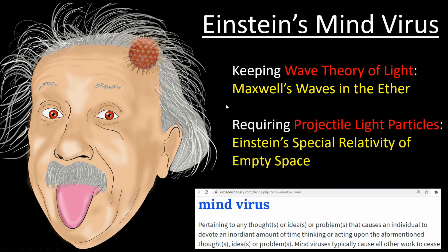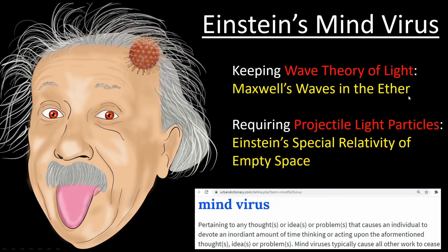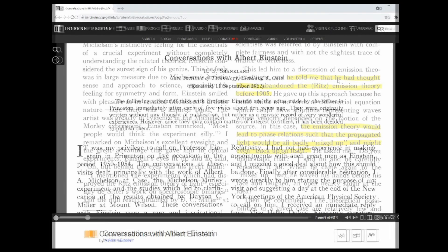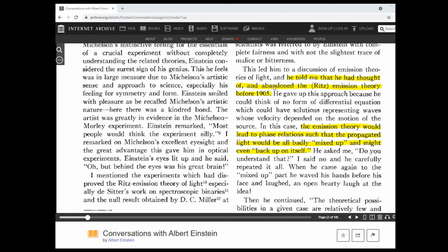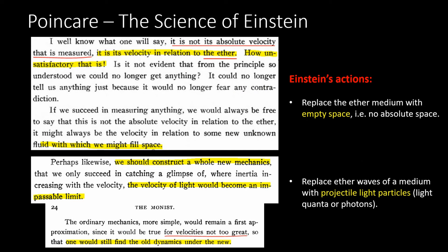Here we have another example of Einstein's mind virus. He has two opposite ways of viewing light, but only requires one — because he's getting rid of the waves in the ether when it comes to his special relativity theory. Einstein had previously worked on a light particle theory but had to abandon it because those projectile particles wouldn't work. But now he has empty space for the projectiles, and people can still think about waves.